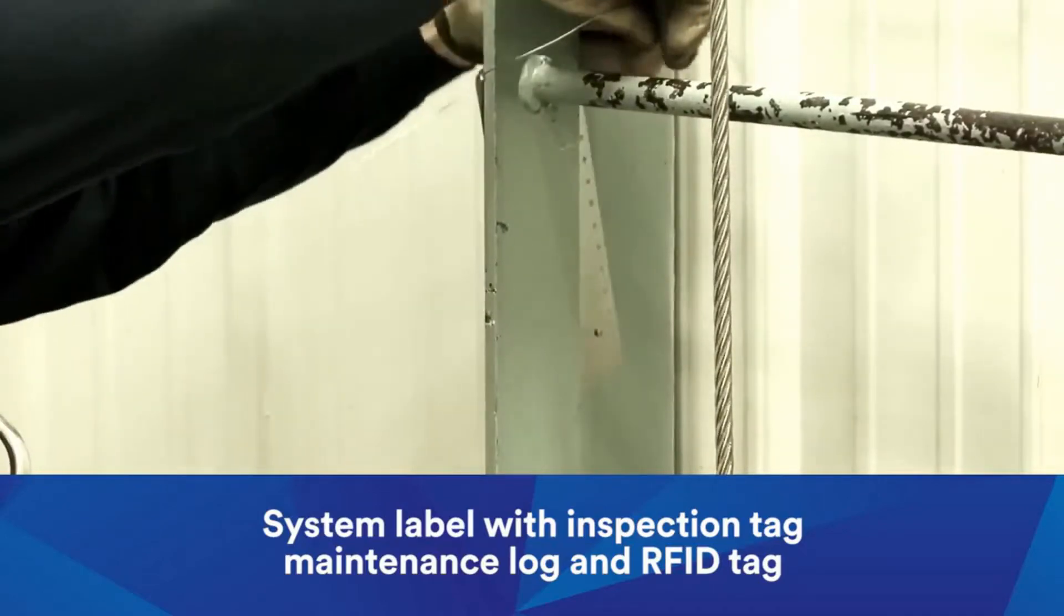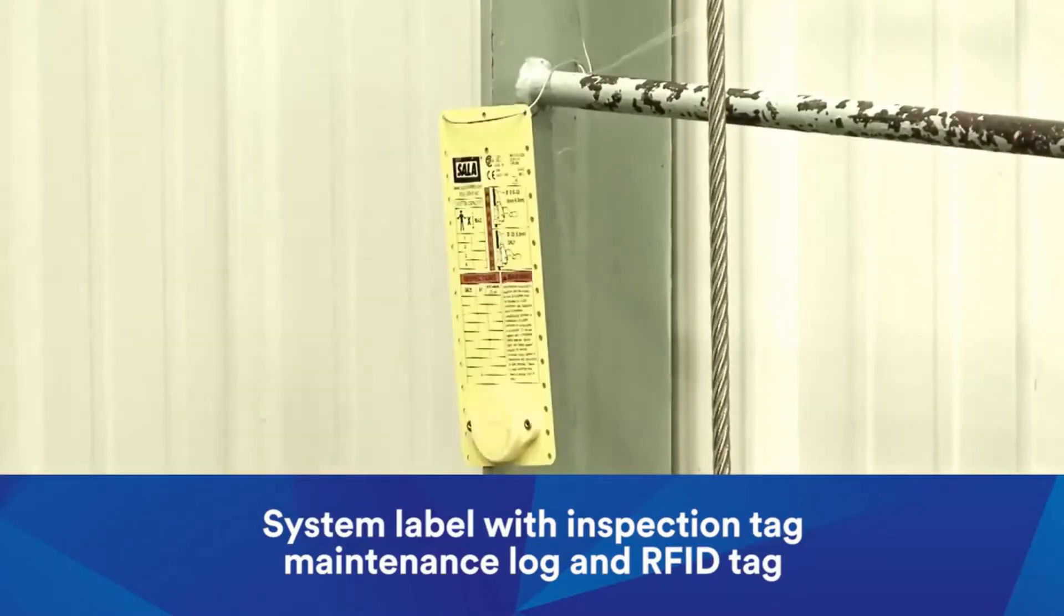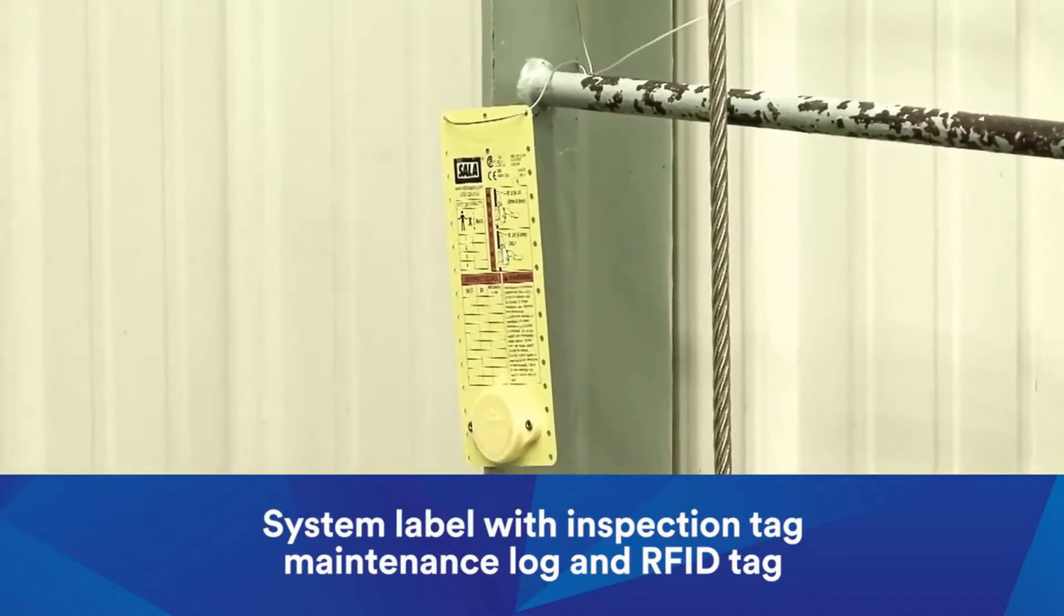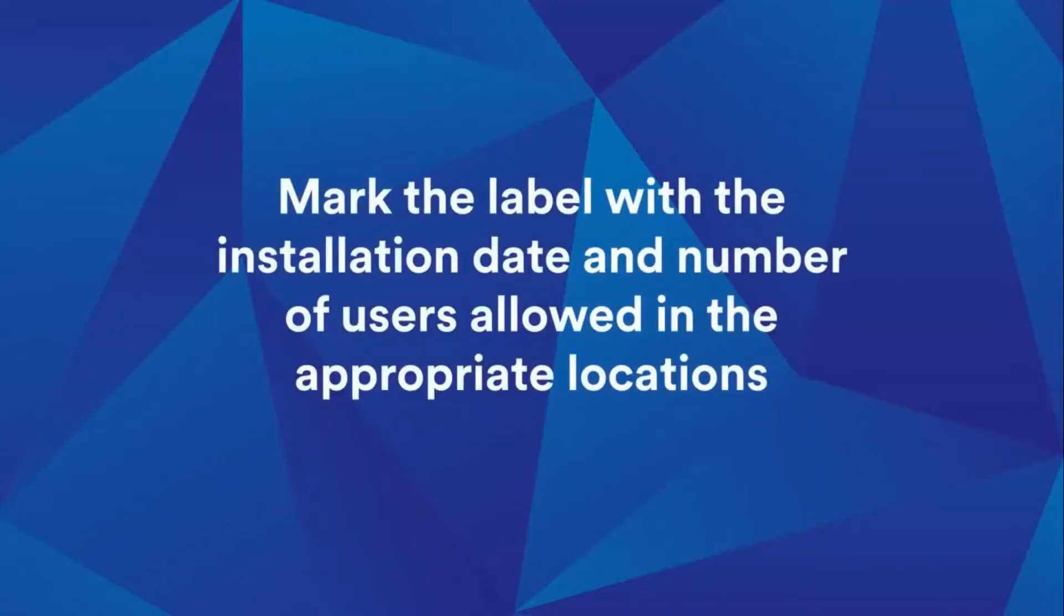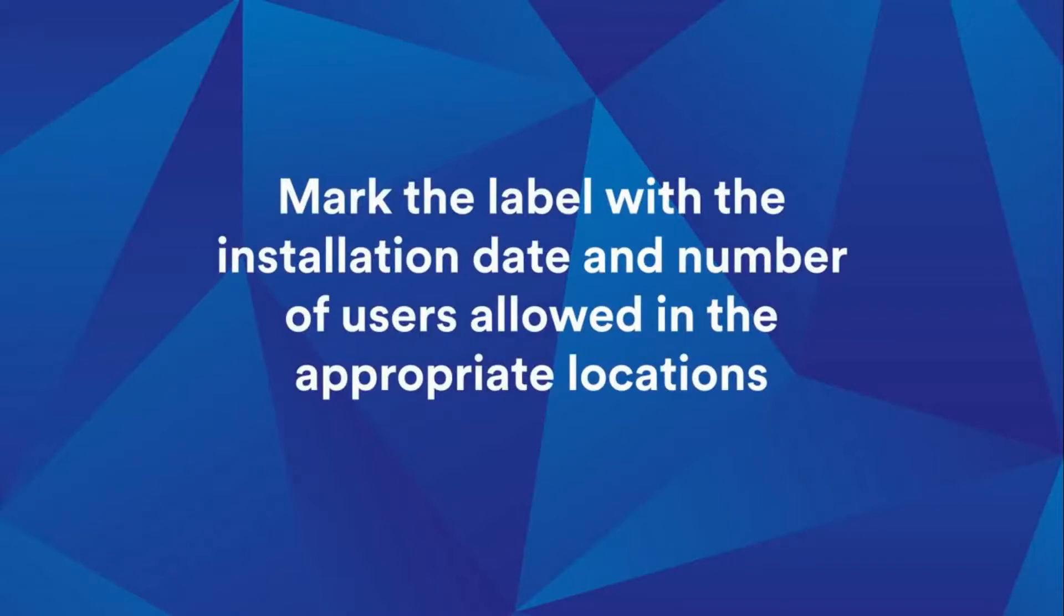Install the system label, which includes an inspection and maintenance log and an iSafe-enabled RFID tag onto the ladder. Mark the label with the installation date and number of users allowed in the appropriate locations.